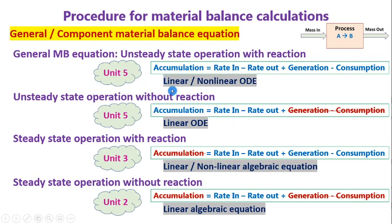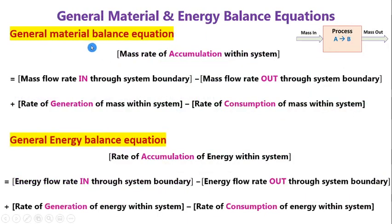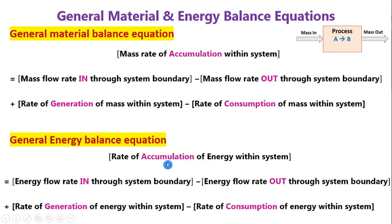Here we are going to use the accumulation term. If there is no reaction in the process, the generation and consumption terms become zero; if there is a reaction, they are non-zero. A general material balance or energy balance equation can be written as: the mass rate of accumulation equals the mass rate coming in minus the amount going out, plus the amount generated minus the amount consumed by reaction within the system. It is a balance between in and out, generation and consumption, and the remainder accumulates within the system as a function of time.